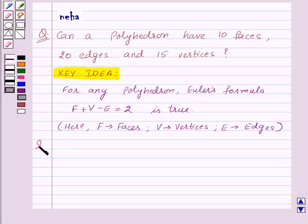Now let's see its solution. Here in the question, the given polyhedron has 10 faces, that means F equals 10, 20 edges, that means E equals 20, and 15 vertices, that is V equals 15.